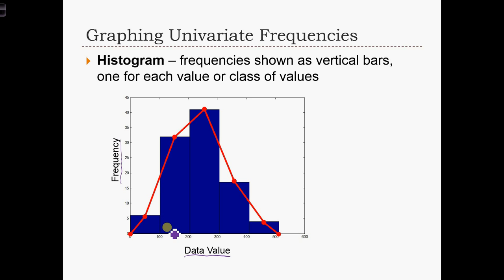Here what this graph is telling us is that there are five observations that have a value between 0 and 100, there are about 32 observations with the value between 100 and 200, there are roughly 43 observations between 200 and 300, there are about 16 observations between 300 and 400, and then there are about four observations between 400 and 500. This is really simple to do in SPSS, the software package that you're going to be using.